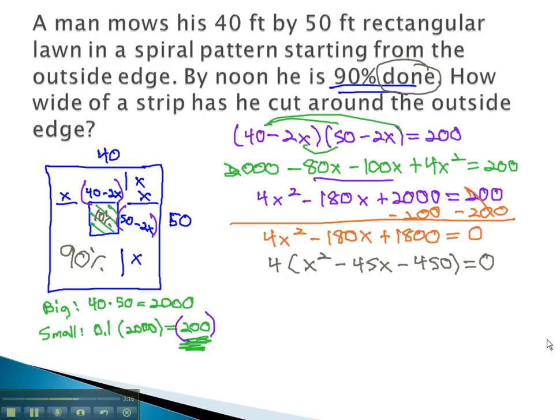At this point, we can either use the quadratic formula, or try and factor this trinomial. It does factor to x minus 30, times x minus 15, equals 0.